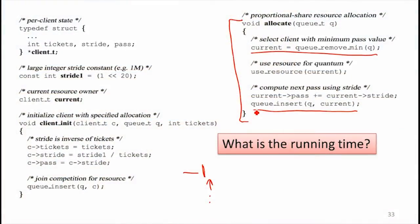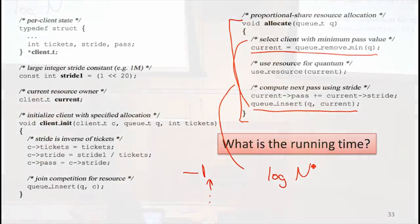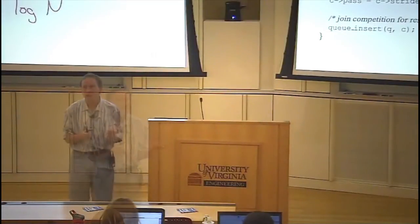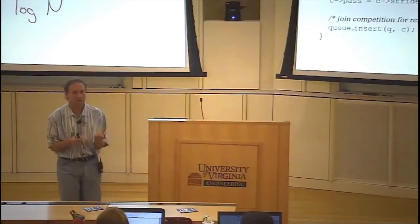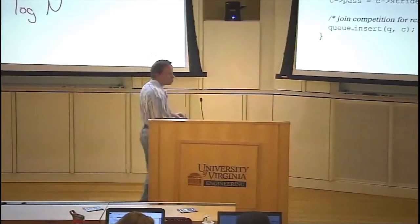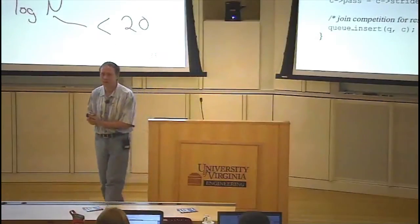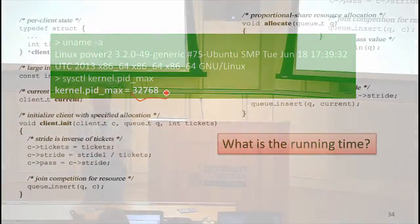The cost of one scheduling decision scales with log n, where n is the number of processes. Should this worry us? How big is n? It's just the number of processes — we can have thousands, but probably not millions on normal machines. For n less than a million, log n is less than 20, so it's effectively a small constant. On my Mac the max process ID is 32,000, and it's rare to have more than a few thousand processes, so log n is not a big problem.